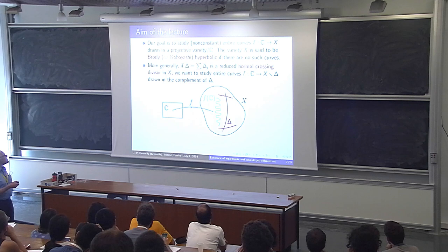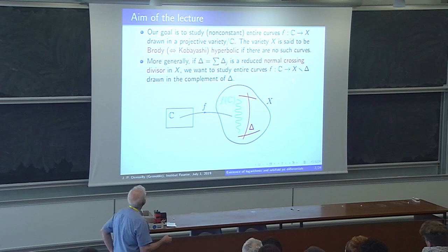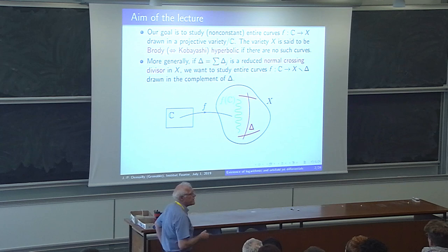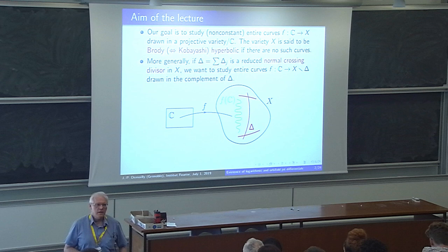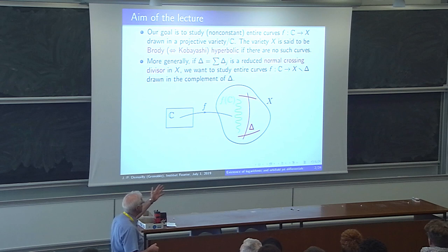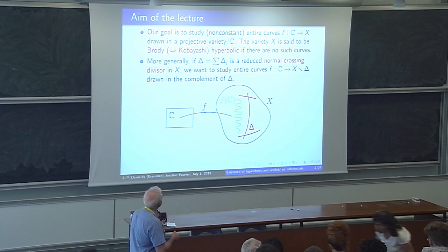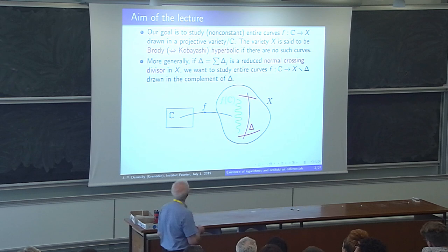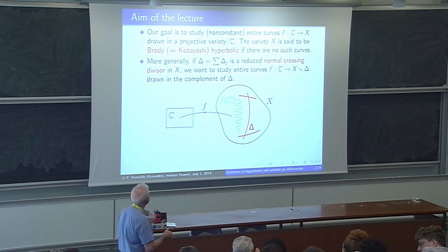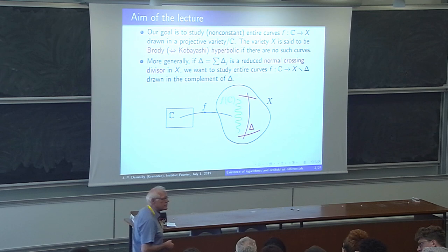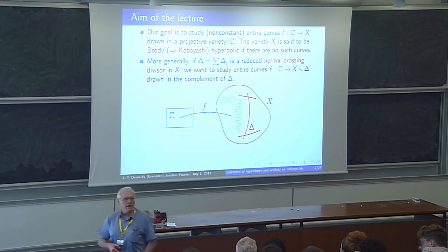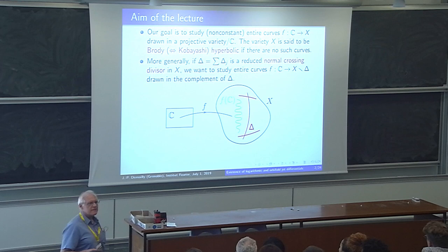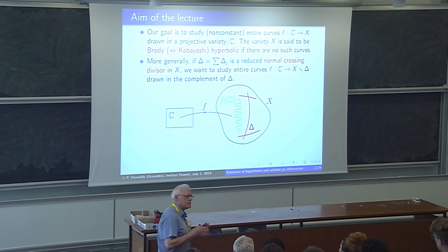More generally, you may want to study the non-compact, so-called logarithmic situation. You take the complement of a divisor, and by Hironaka you can always desingularize. After blowing up, you can replace your variety by another where the divisor becomes a normal crossing divisor. Then you want to study entire curves sitting in the complement of this normal crossing divisor. In green here you have the image of your entire curve, and it completely avoids the components of your divisor delta.